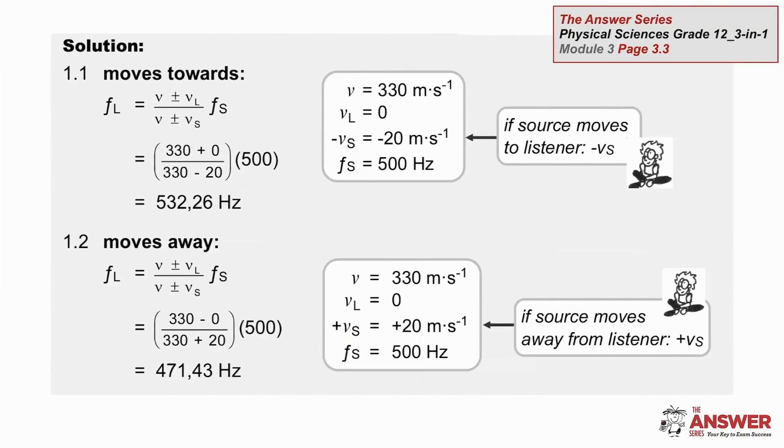Here is the solution. When moving towards, the velocity fraction must be greater than one. We achieve this value by adding the velocity of the listener at the top and subtracting the velocity of the source at the bottom. The velocity of the listener is zero. You must always show the substitution of the zero. When moving away, the velocity fraction must now be less than one. We get a value less than one when we subtract the velocity of the listener from the top and add the velocity of the source at the bottom. You can see the expected result in the answers. The frequency heard by the listener as the vehicle moves towards is higher than the frequency heard when it moves away.